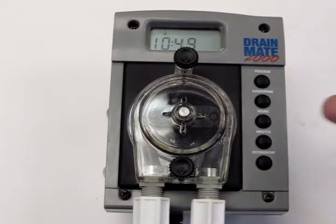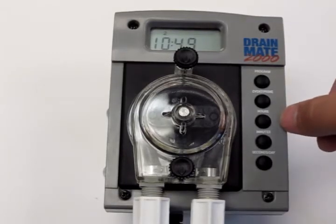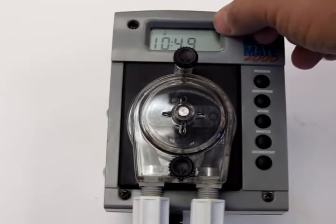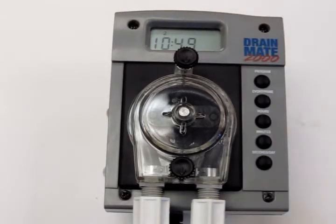To begin programming, you will start by setting the current time with the hours and minutes button, and it will indicate PM or AM on the right hand corner as well. We have the current time set, so we're going to leave that alone.